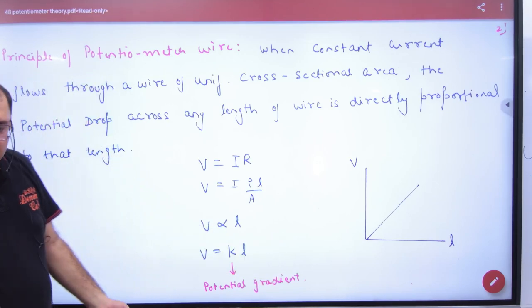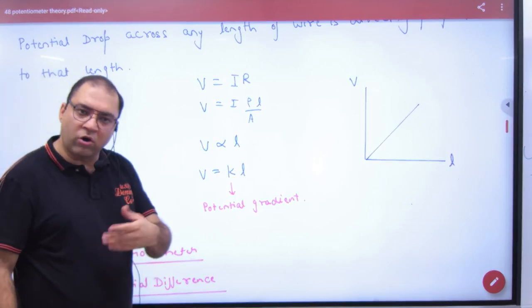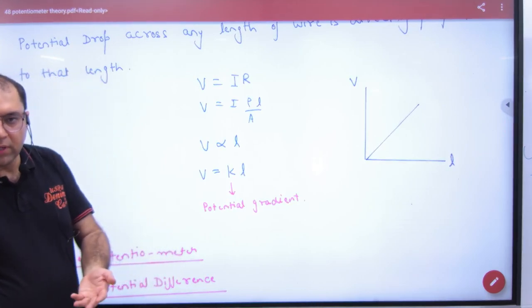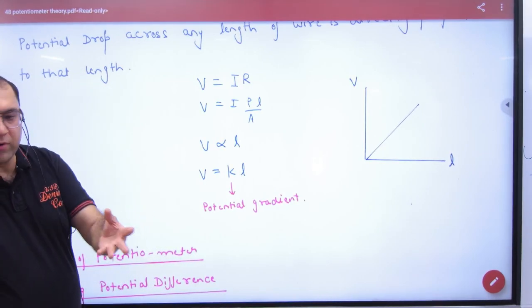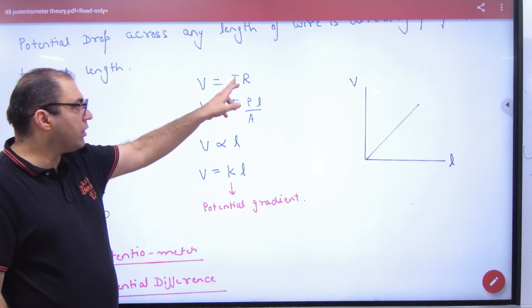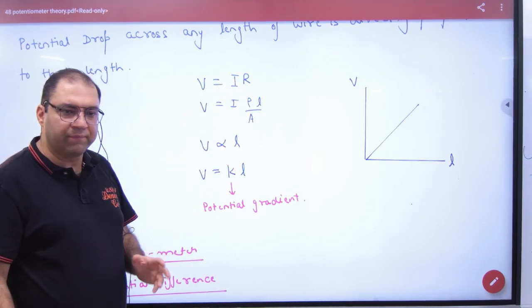It was another way to prove it. If you put on the balancing length, then what is R? R equals ρL/A. So V is proportional to L.